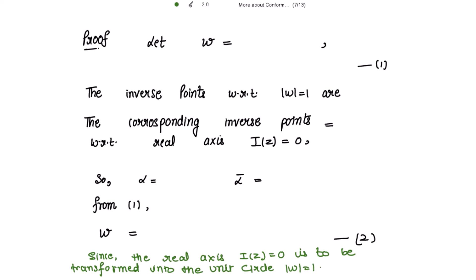Let's move on to the proof. Let w = (az + b)/(cz + d), with the condition ad - bc ≠ 0. Mark this as equation 1. Now, the inverse points with respect to the unit circle |w| = 1 are 0 and infinity, and the corresponding inverse points with respect to the real axis Im(z) = 0.